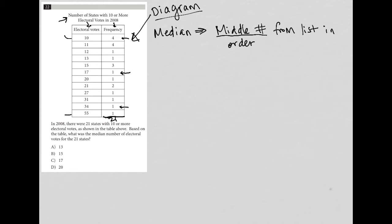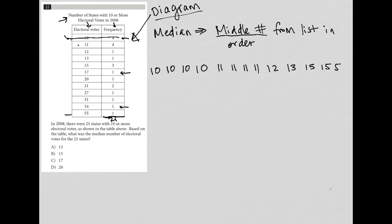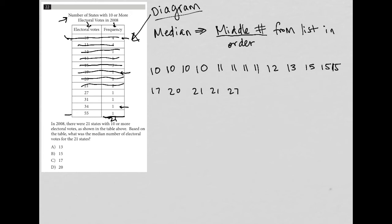For instance, we have four states with 10 electoral votes, which means I should have four 10s in my list, then four 11s, one 12, one 13, three 15s — and I'm getting this directly from the table. Continuing on: one 17, one 20, two 21s, one 27, one 31, one 34, and one 55.